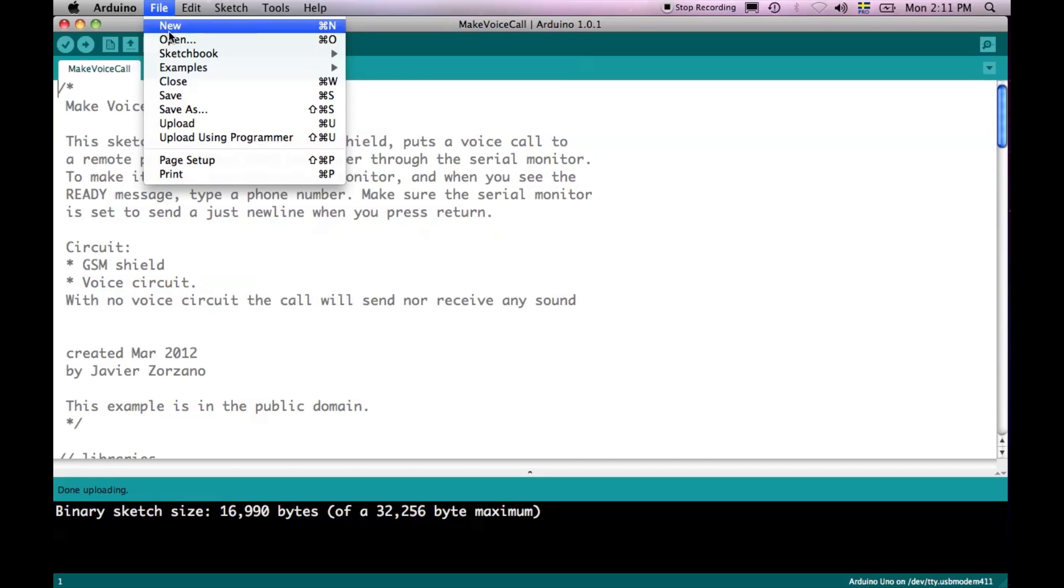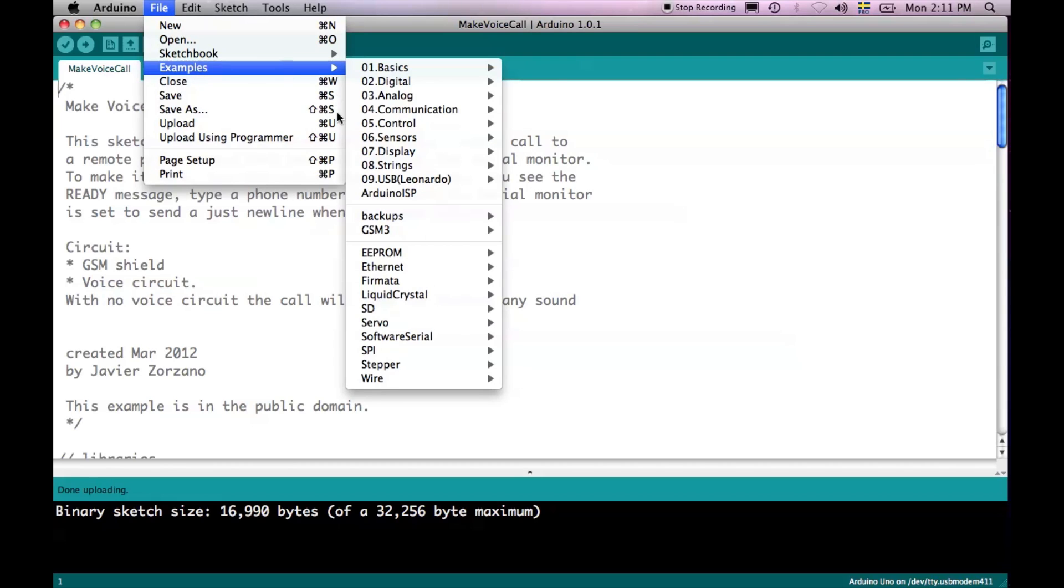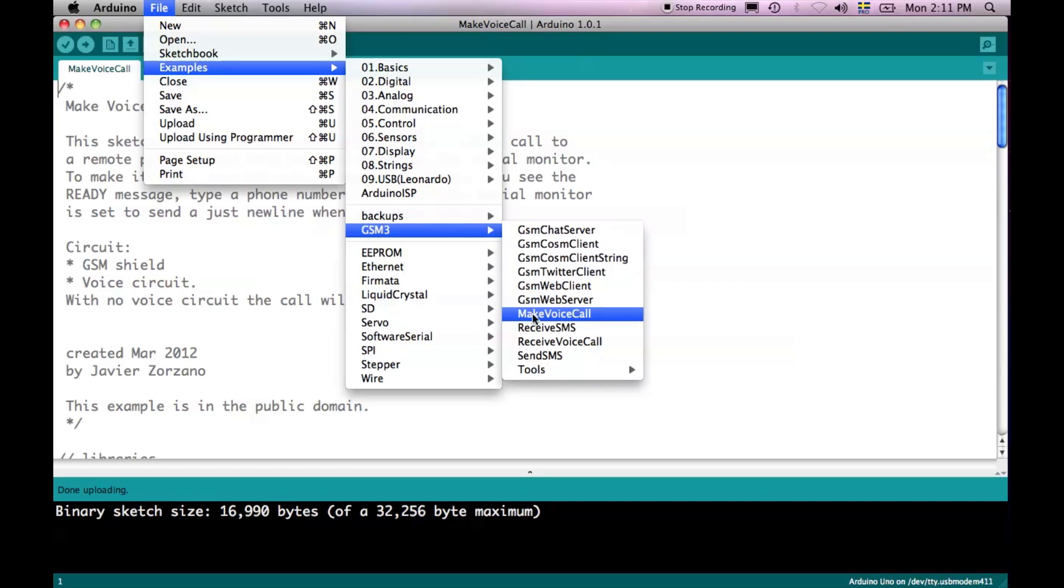You just need to go to File, Examples, GSM, Receive Voice Call.